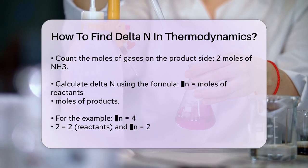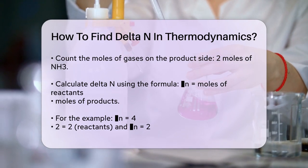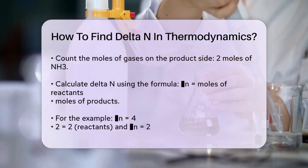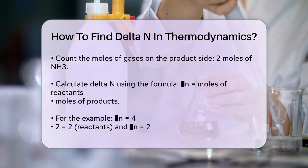So for this reaction, delta N is negative 2. This negative value indicates that there are fewer moles of gas in the products than in the reactants.